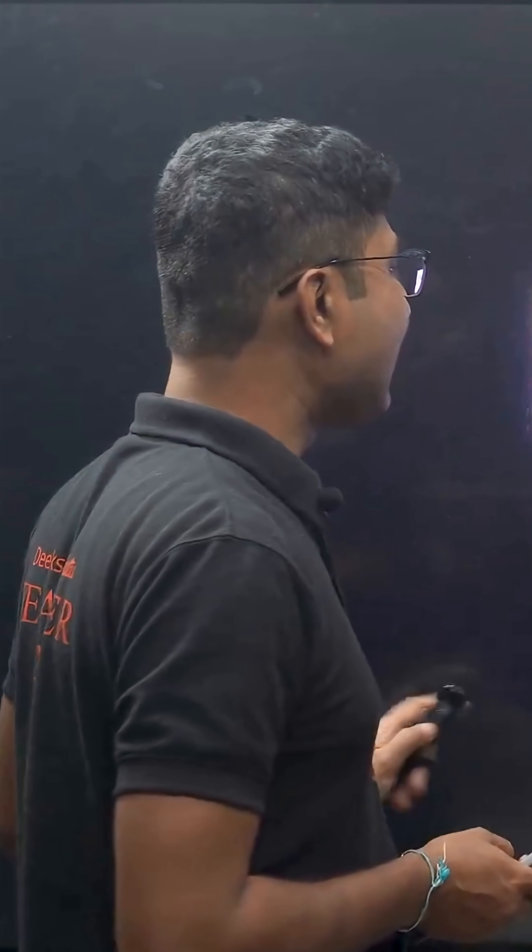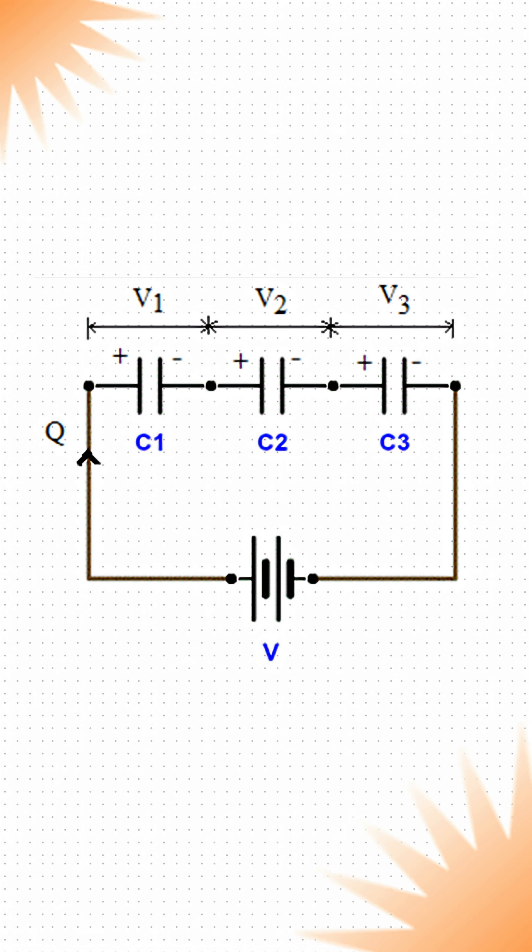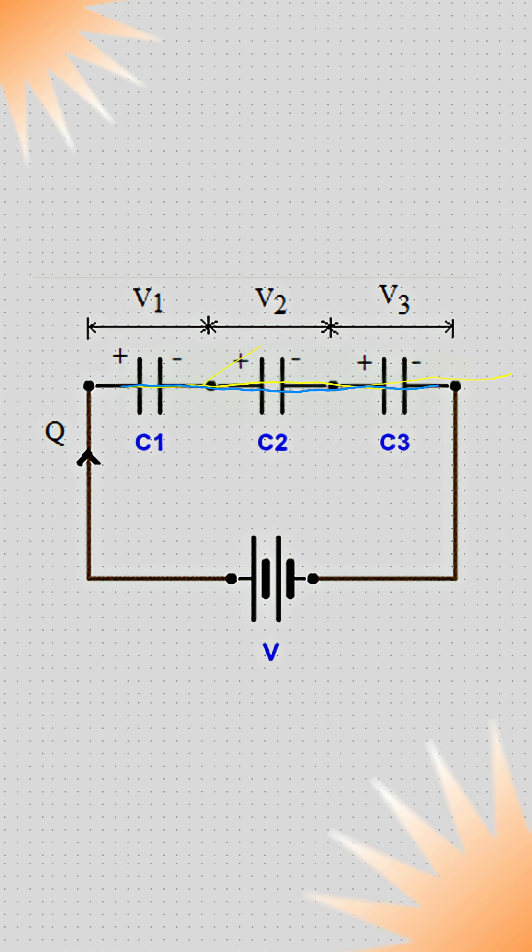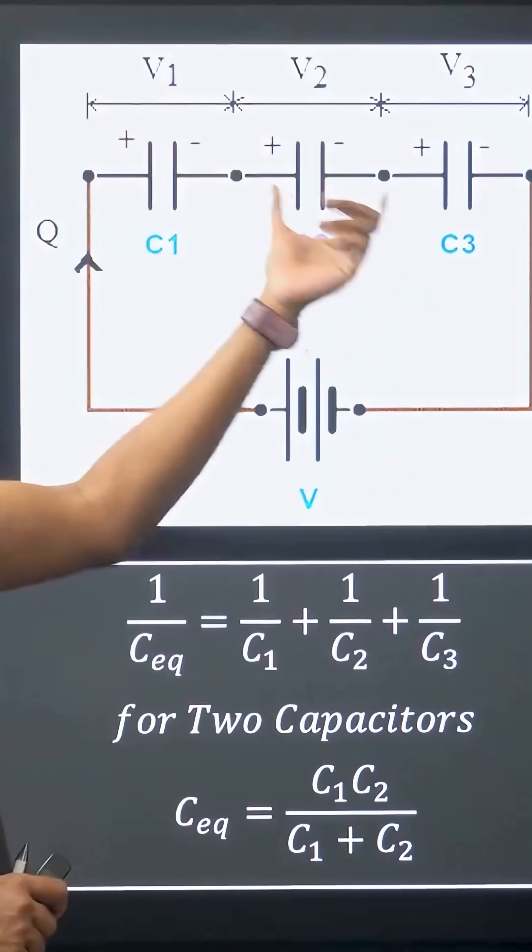Let's look into the series combination first. In series combination, one capacitor is connected after another, and so on. In series combination, the total charge that flows through each capacitor remains the same, whereas voltage across individual capacitors varies from capacitor to capacitor.